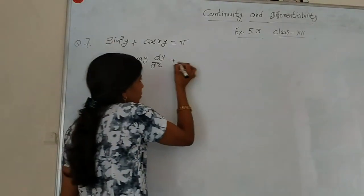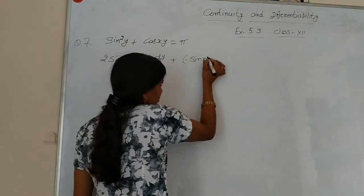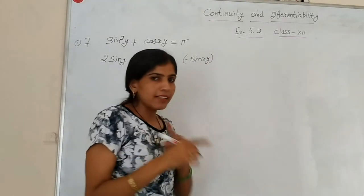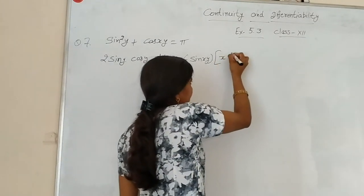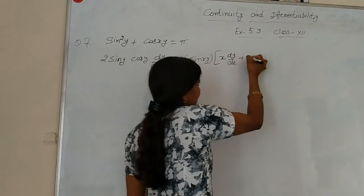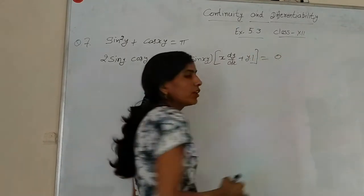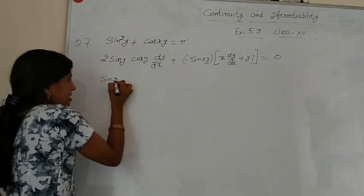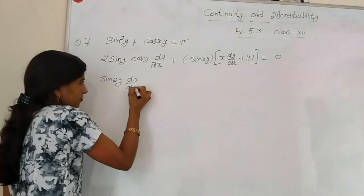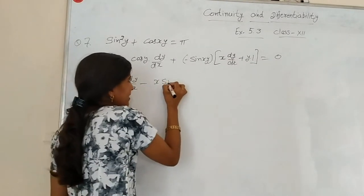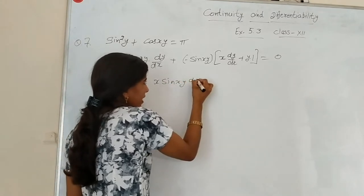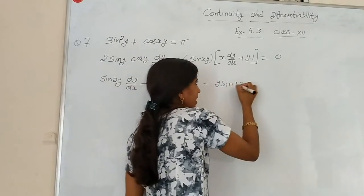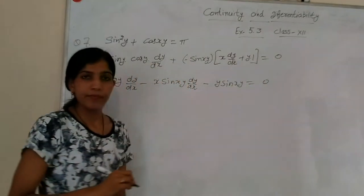For cos(xy), the derivative of cos is minus sin, so we get minus sin(xy). Then we apply the product rule on xy: x as it is times dy/dx, plus y as it is times derivative of x which is 1. The entire expression equals 0. And note that 2 sin y cos y equals sin 2y.